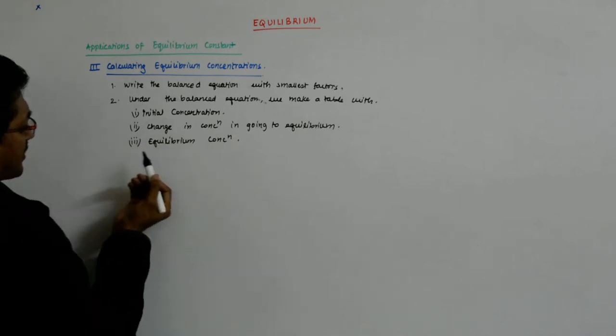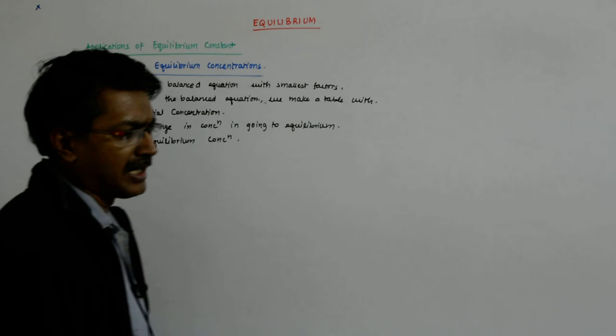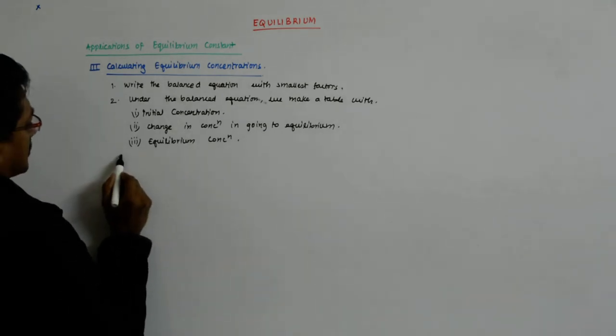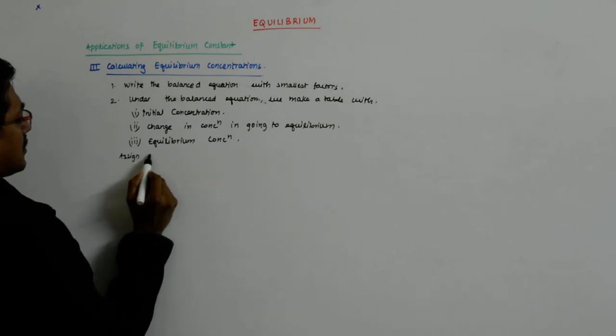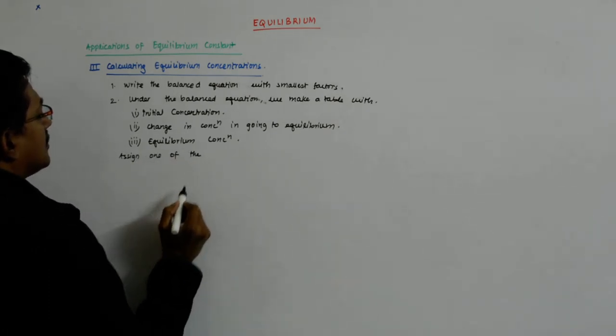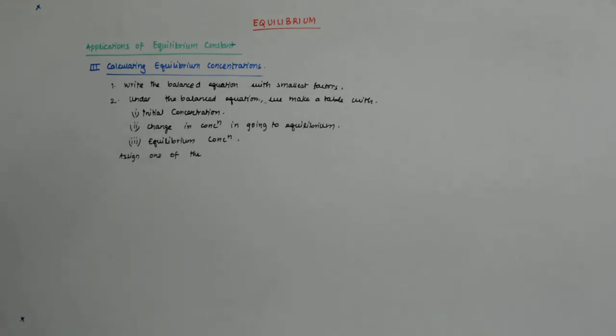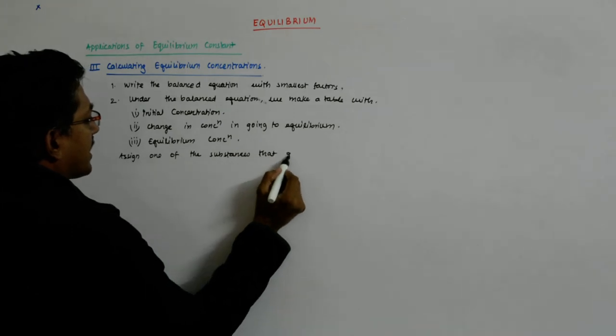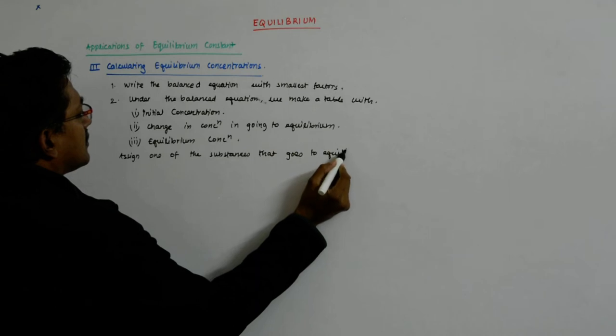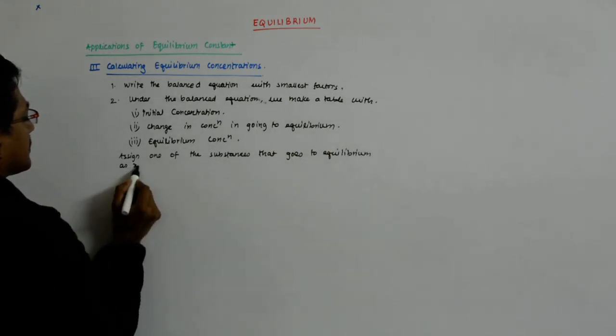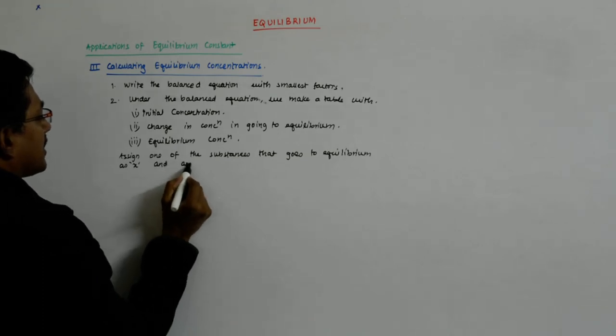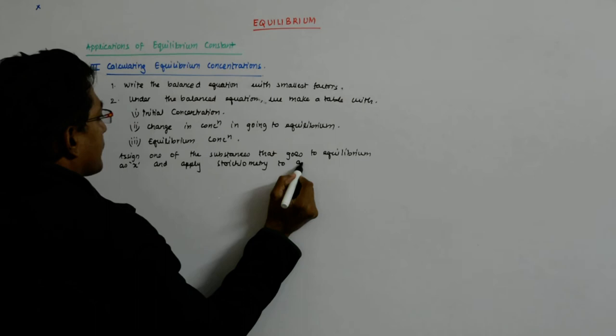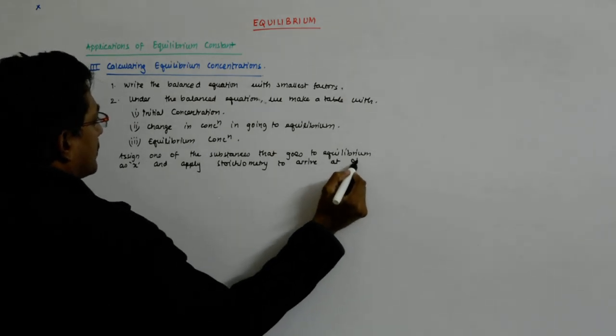So how do you do that? Maybe you assign one of them as x and subtract it from the initial concentration. If you're confused, you apply stoichiometry. So assign one of the substances that goes to equilibrium as x and apply stoichiometry to arrive at other concentrations.